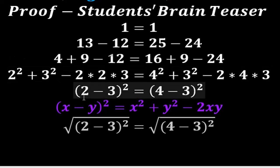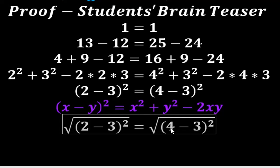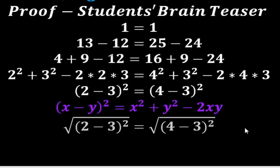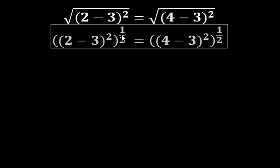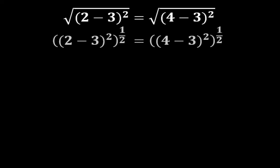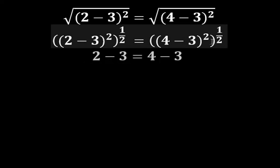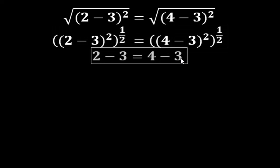Now let's take the square root of both sides: square root of (2 minus 3) all squared equals the square root of (4 minus 3) all squared. This is (2 minus 3) squared to the half equals (4 minus 3) squared to the half. The exponents cancel, giving us 2 minus 3 equals 4 minus 3.